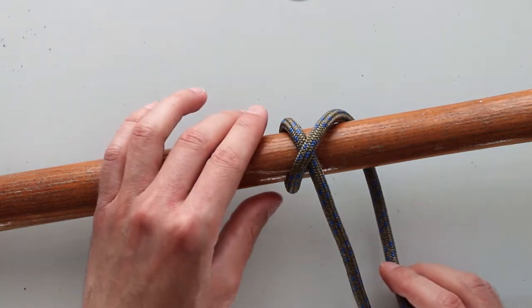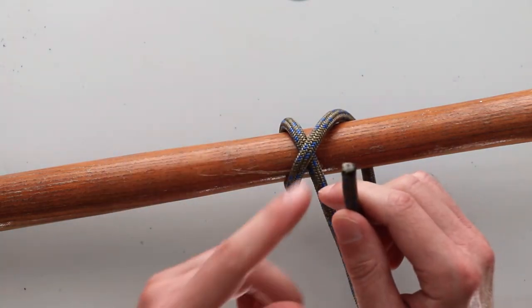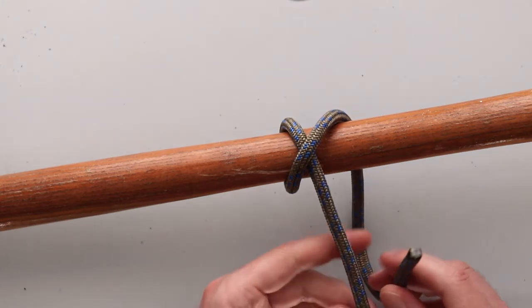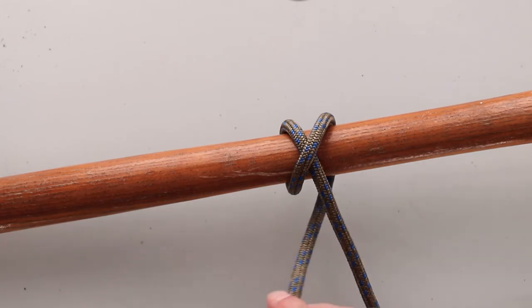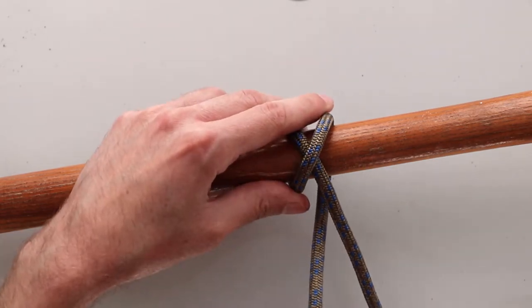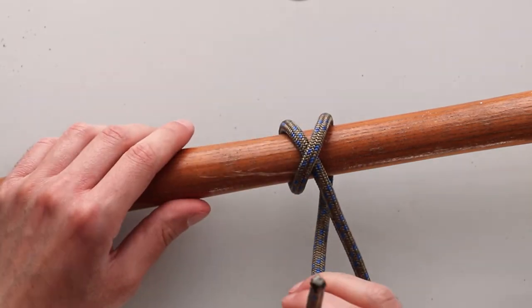Now I nearly have a complete X and what I'm going to do is take my short end and pass it under the long end or standing end of my rope. Now we have a complete X and there's one final step here to complete the clove hitch.